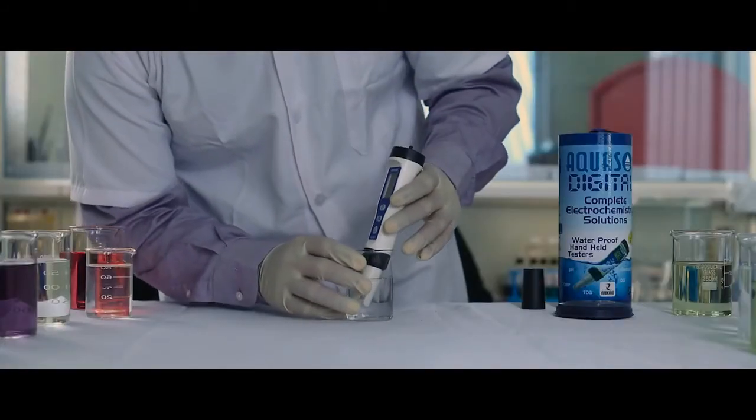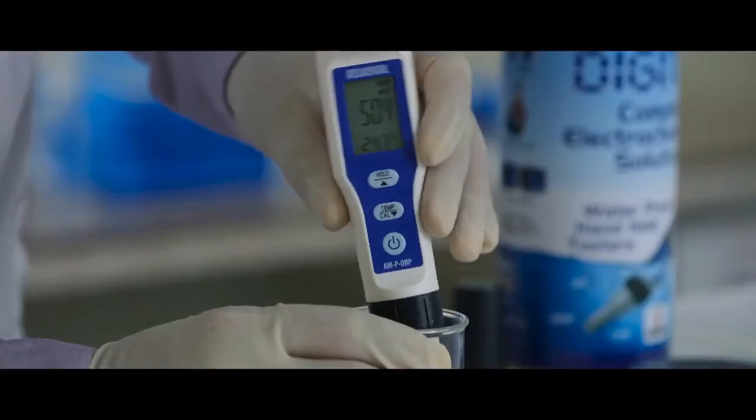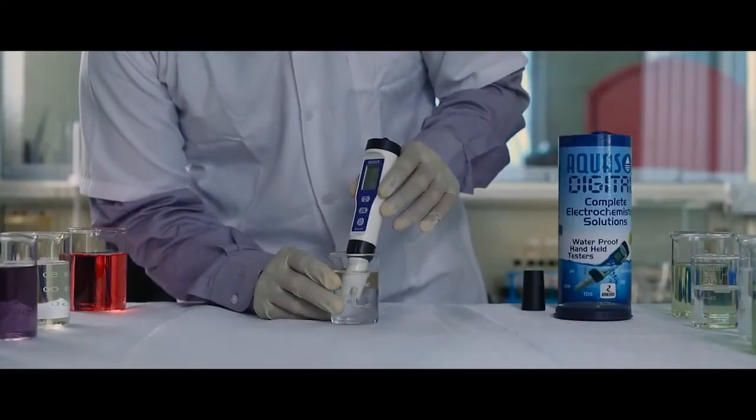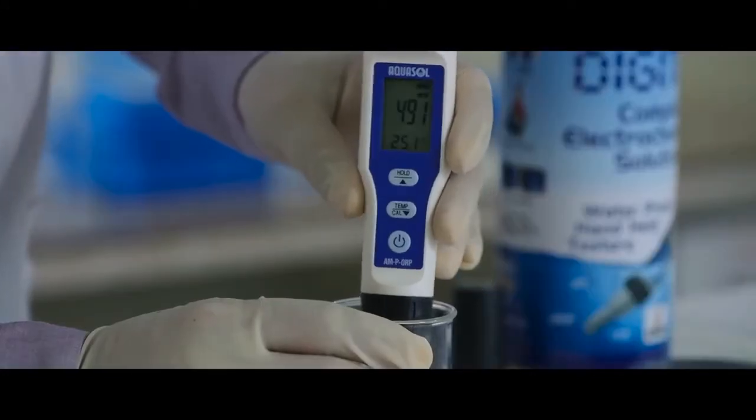Dip the electrode in the sample solution. Stir gently for a stable reading. Note down the ORP of the sample.